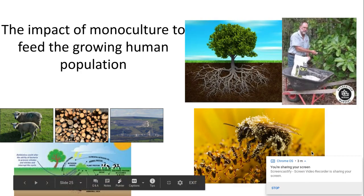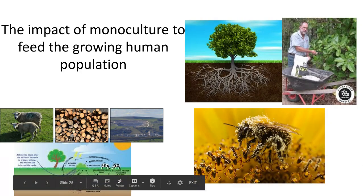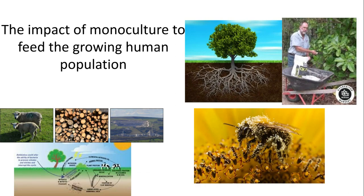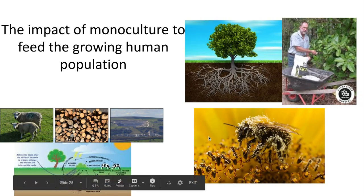You're also reducing the habitats for things such as pollinators. We need pollinators to pollinate our plants, so by reducing habitat biodiversity and reducing the population of bees, for example, we are causing a negative impact on other plants as well.